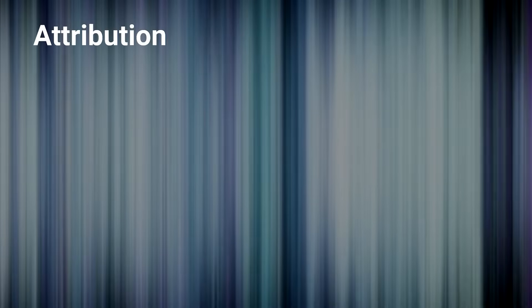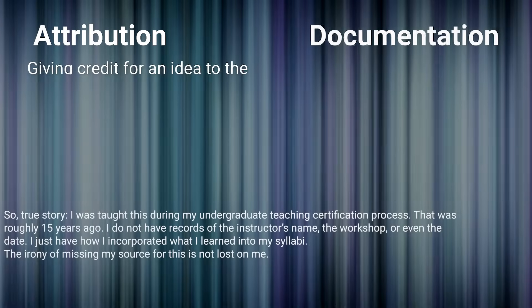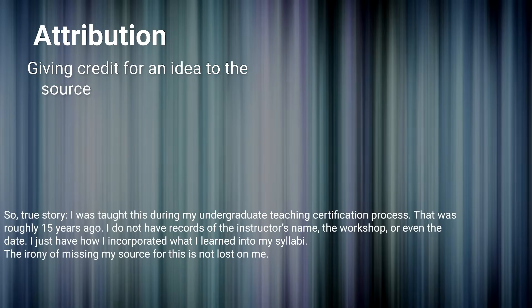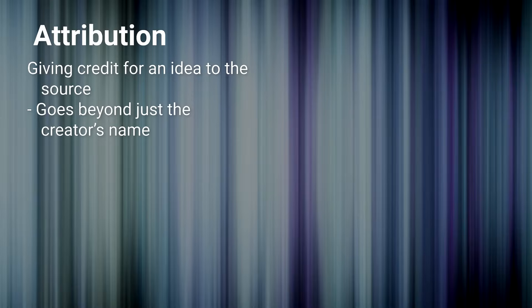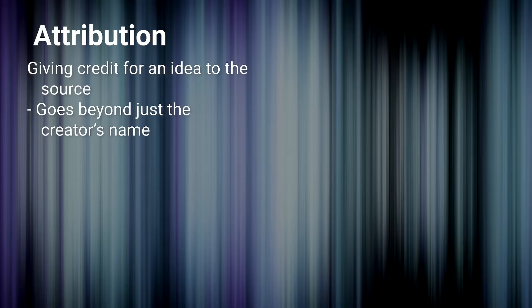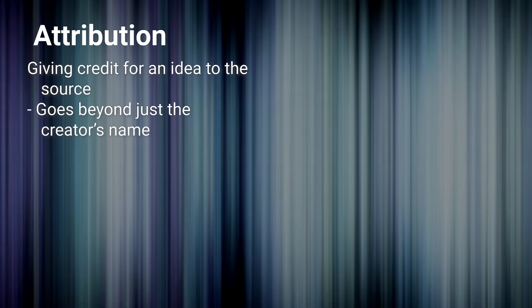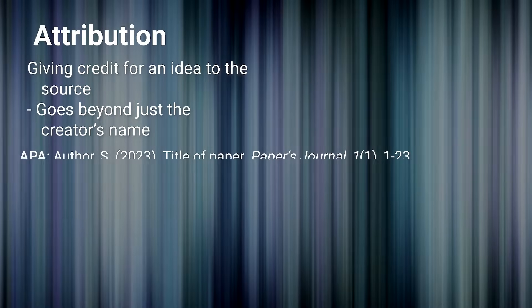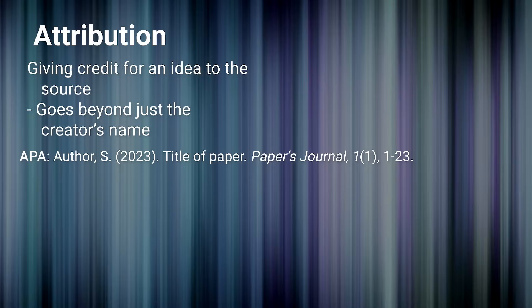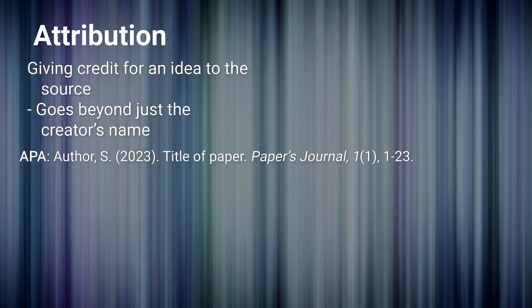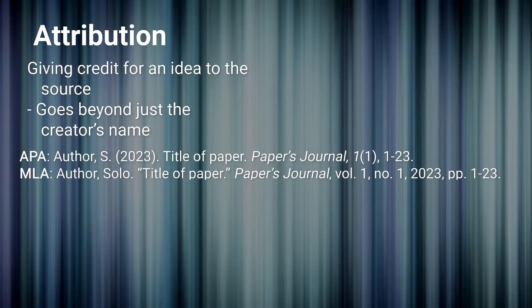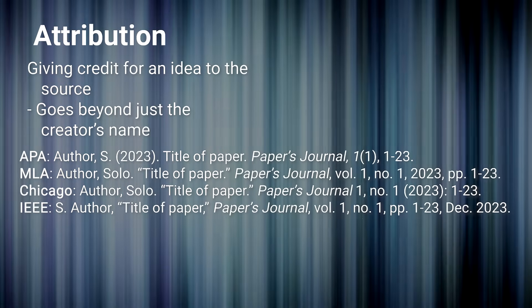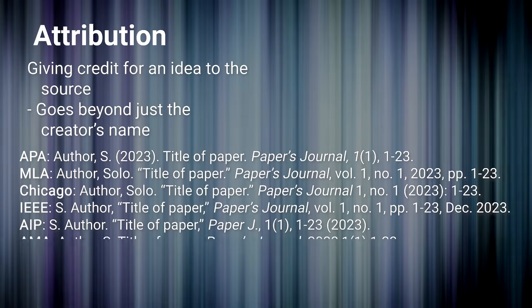There are two aspects to properly referencing works: attribution and documentation. Attribution means you are correctly and sufficiently identifying where you got an idea from. You'll generally need the name or names of who made the thing originally, the year, the title of the work, and where it was published or presented. Usually you'll be working with some guideline for what info to put where. I'm most familiar with the APA formatting standard — the American Psychological Association's. There are others like MLA, Chicago, IEEE, AIP, and on and on.